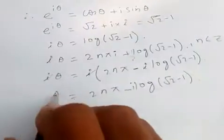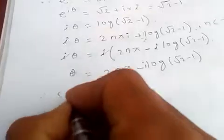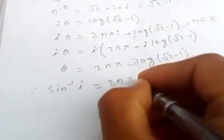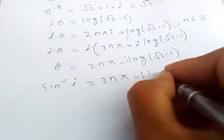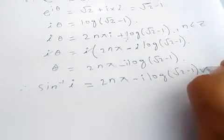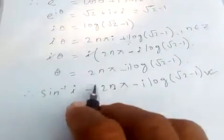So theta is equal to 2nπ minus i log of root 2 minus 1. So theta is just sine inverse of i. So sine inverse of i is 2nπ minus i log of root 2 minus 1. If you put n equal to 0, 1, 2, 3, you will get sine values.